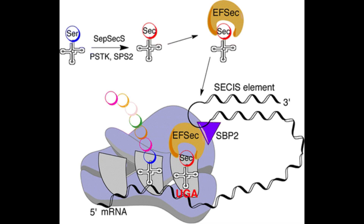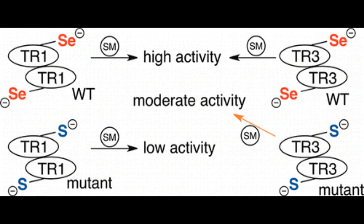Mammalian thioredoxin reductase is a selenoprotein, meaning that it incorporates the rare amino acid selenocysteine into its primary sequence. The presence of selenium instead of sulfur allows for greater reactivity. Selenium is more reactive than sulfur, and selenols are much more acidic than thiolates, allowing them to be more readily deprotonated at physiological pH to produce the highly nucleophilic selenolate anion. It has been shown that replacement of selenocysteine with cysteine in mammalian thioredoxin reductase dramatically reduces its activity and completely destroys its ability to reduce any other substrates.